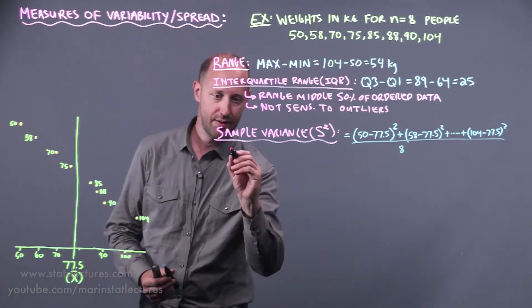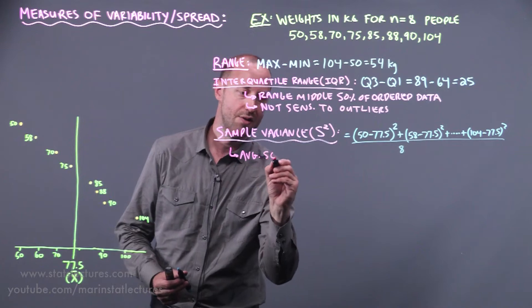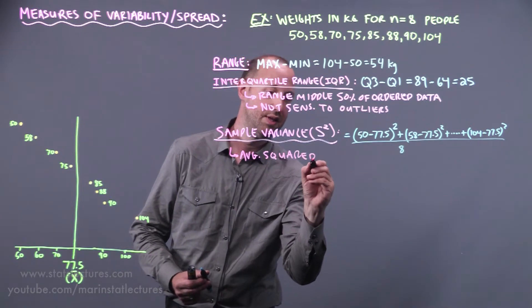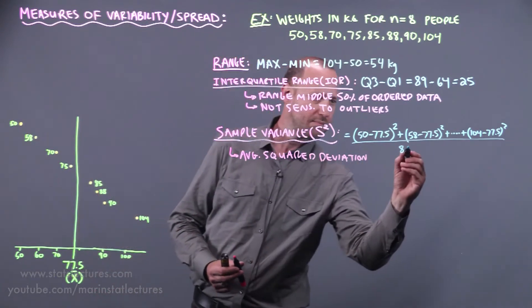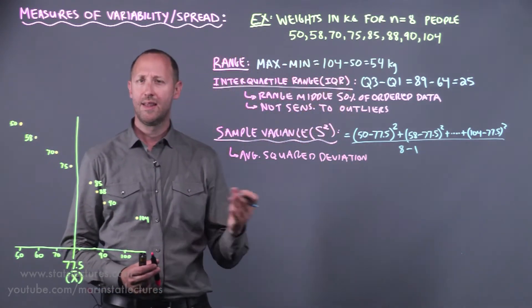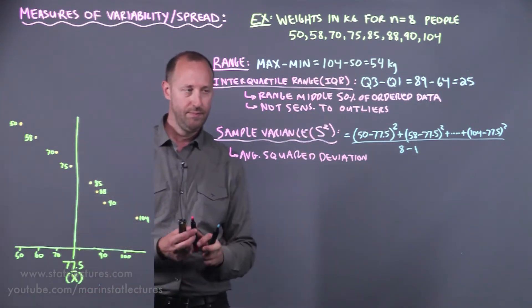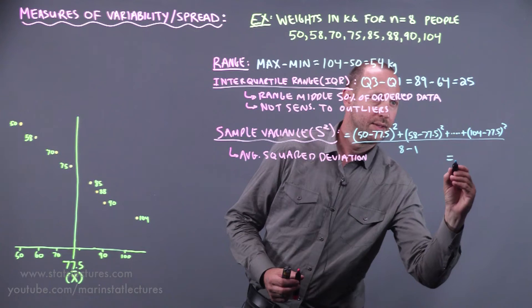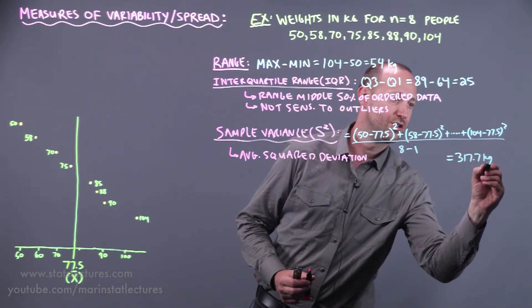The sample variance is giving us the average squared deviation. One thing to note in the formula is that we actually subtract one from this. In that separate video we'll expand on why we're subtracting one. If we were to work this out it would come out to 317.7 kilograms squared.